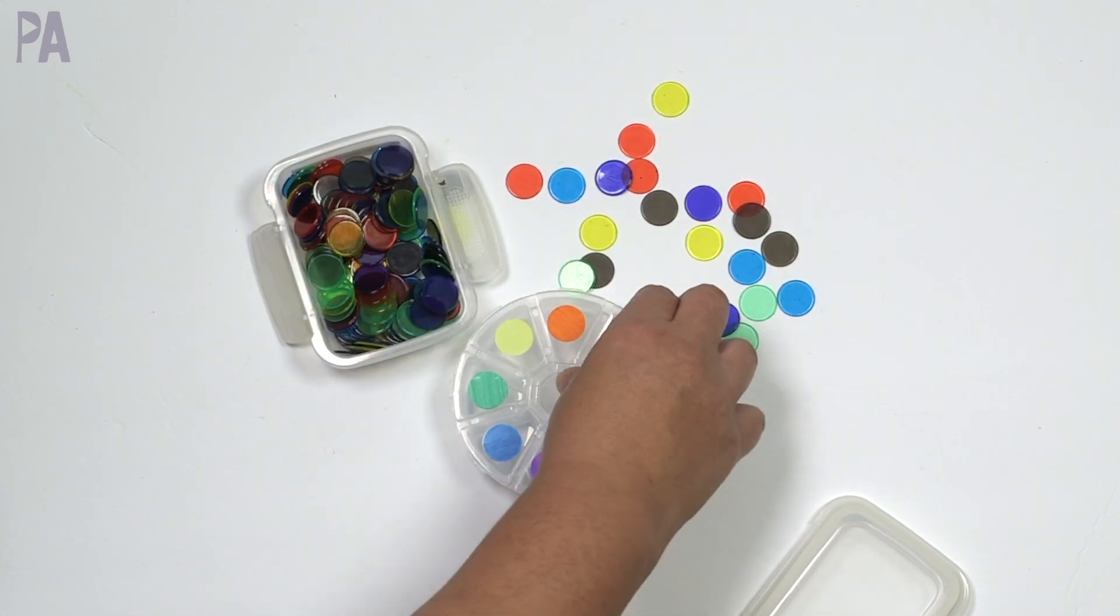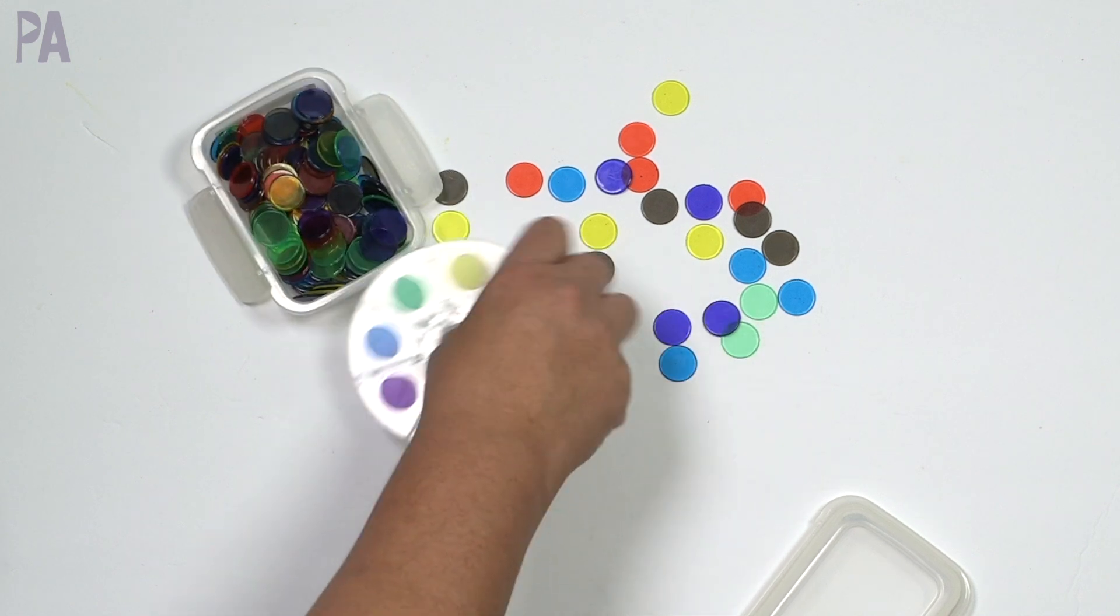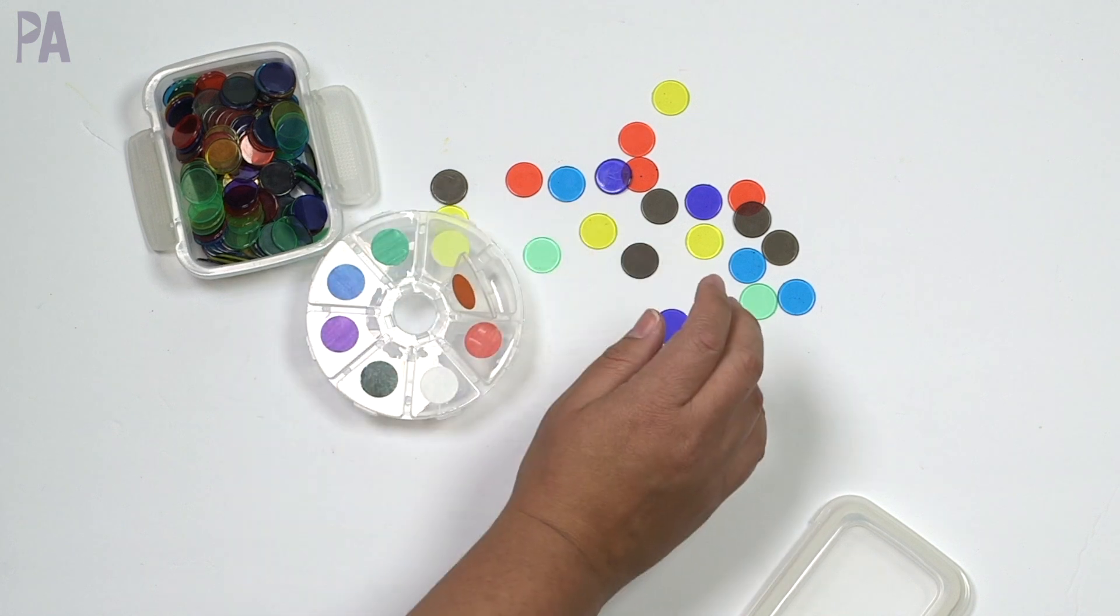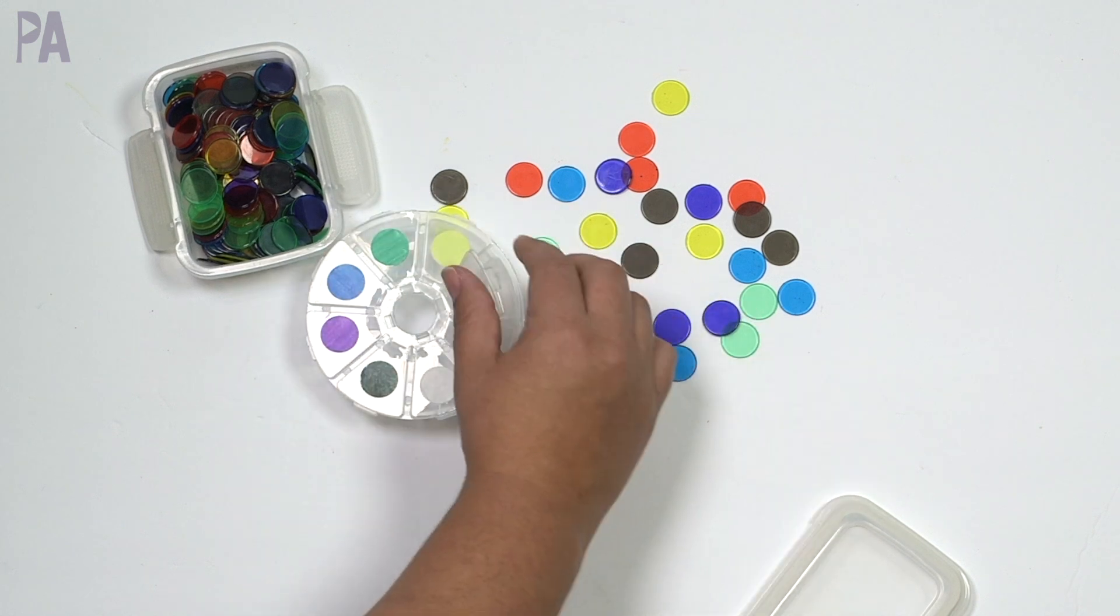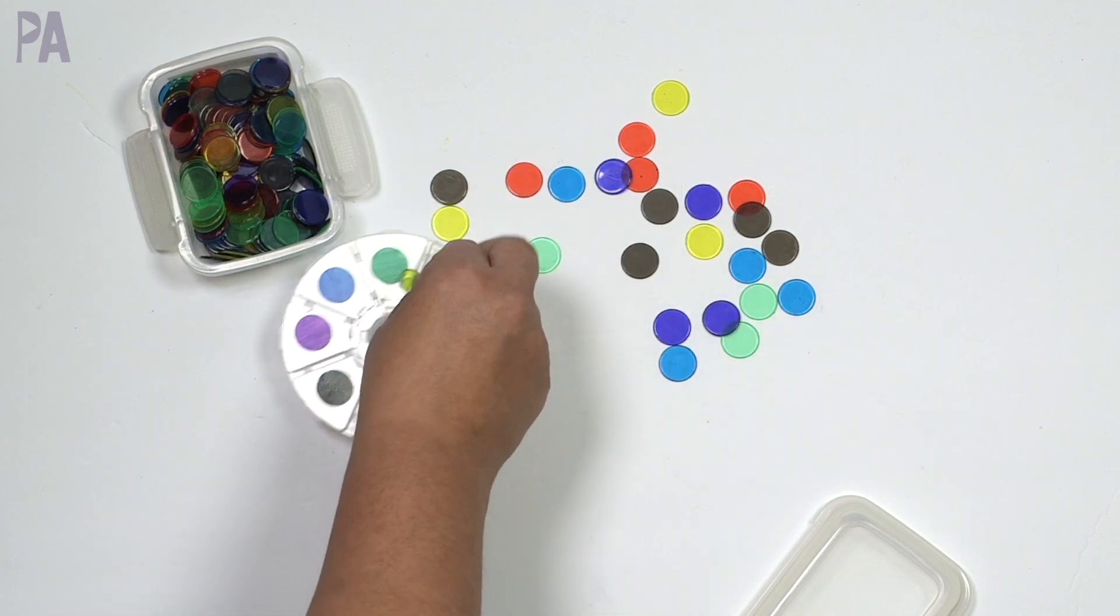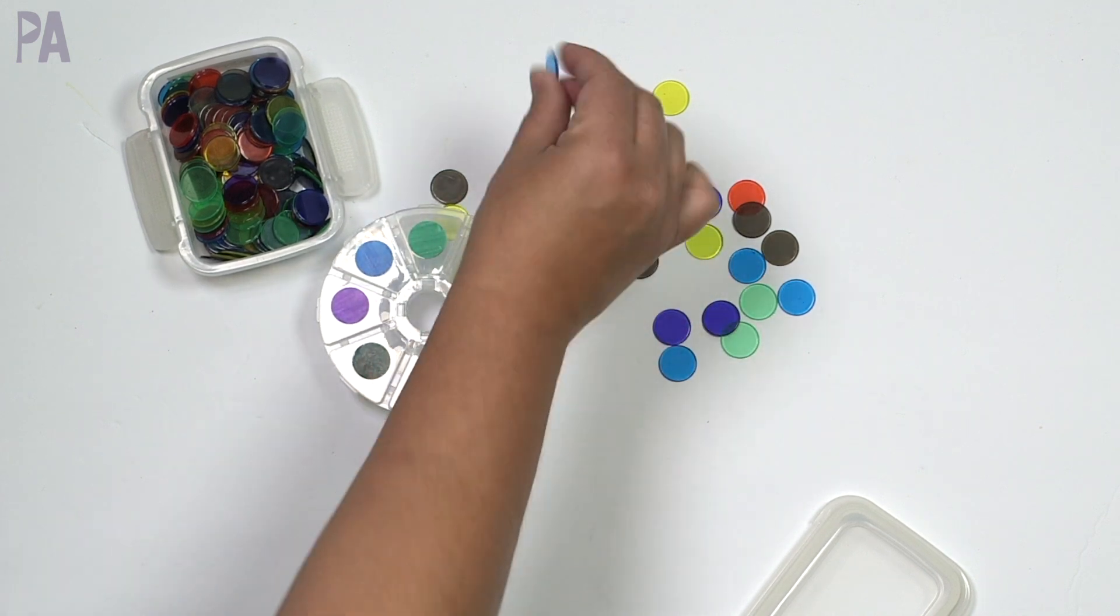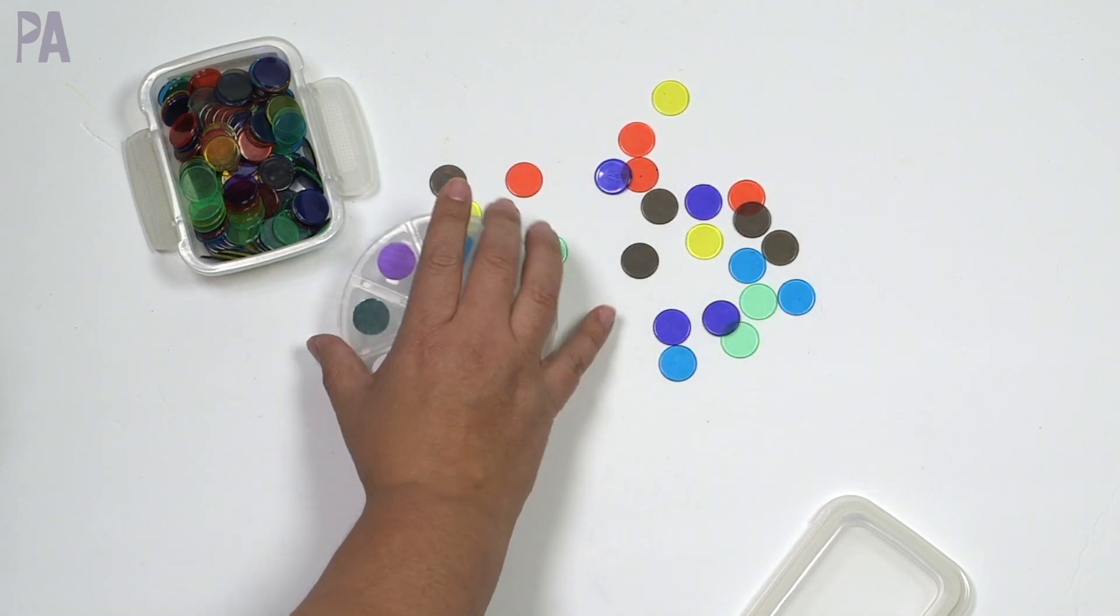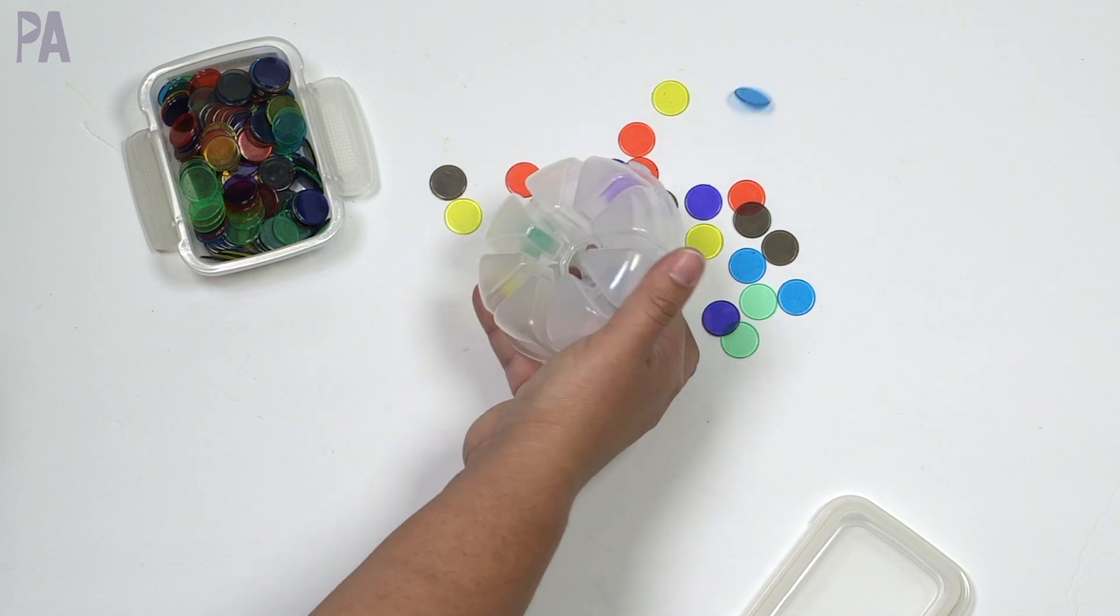And the reason why I did this is for increased fine motor. So toddlers are probably not going to be at this level quite yet. Older toddlers probably will be fine. But the object would be to sort into each colored compartment. And because these are so small, it's excellent for that pincer grasp, that fine motor skill, to sort them that way. So just another thing to think about. It's a more advanced skill.